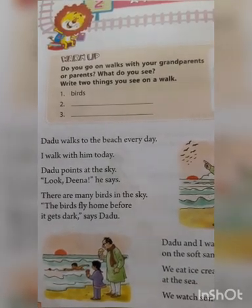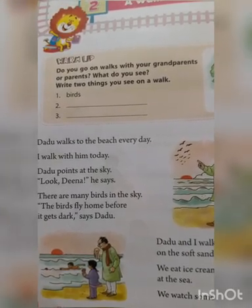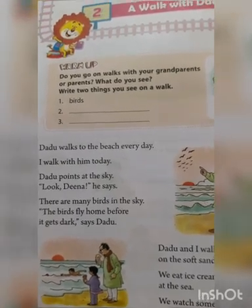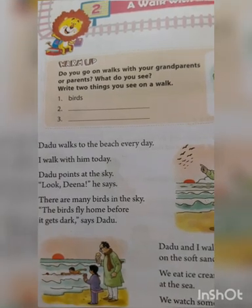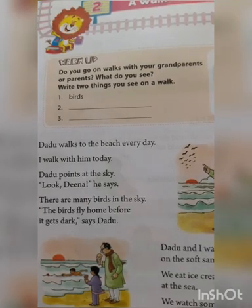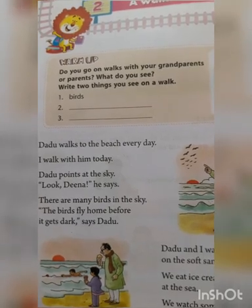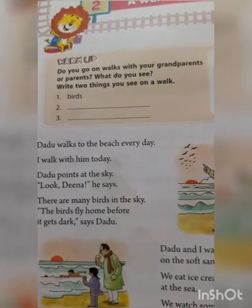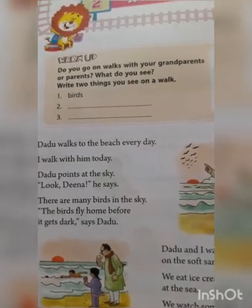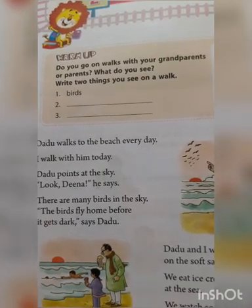Dadu points at the sea — Dadu apni ungliyon se sea ki taraf ishara kar rahe hai. 'Look, Deena,' he says — unhone kaha, 'Deena, dekho idhar.' There are many birds in the sky. The birds fly home before it gets dark, says Dadu — Dadu ne kaha, yeh jo bohot sari birds hai, woh apne ghar ja rahi hai, kyunki andhera hone wala hai.